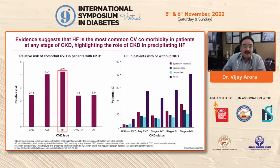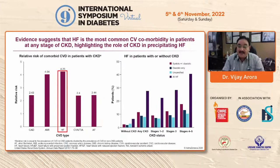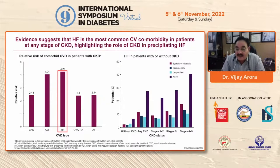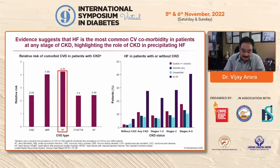Looking at causes of death in patients with CKD — in heart failure, comparing patients with and without CKD, across stages: without CKD, any stage of CKD, stage 1 and 2, stage 3, and stage 4 and 5 — the most common cause of death from heart failure is seen in stage 4 and 5.